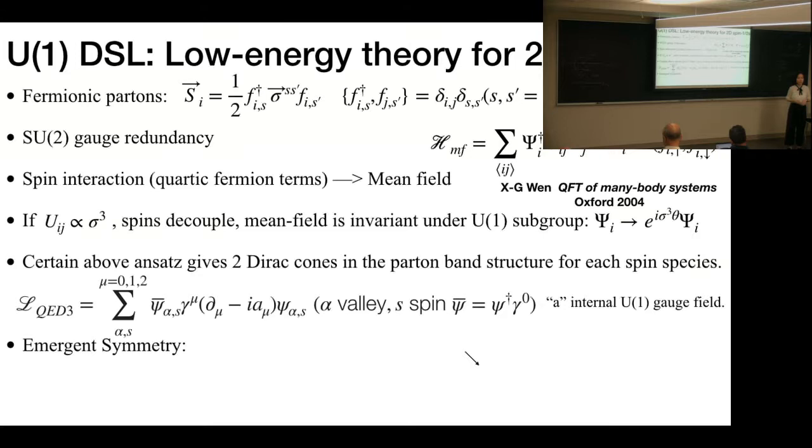After we include the gapless gauge boson fluctuation—namely, the small A-field for the U(1) subgroup—then the low energy theory is described by these four identical Dirac fermions, so-called QED3.